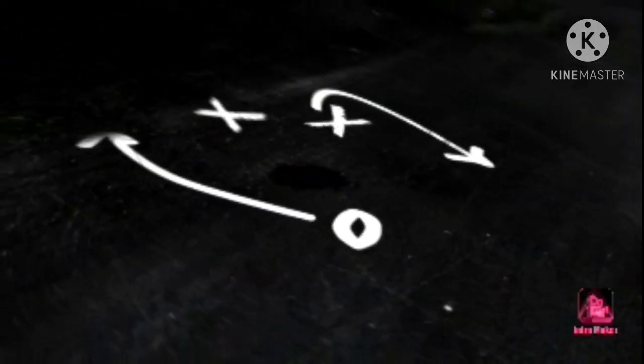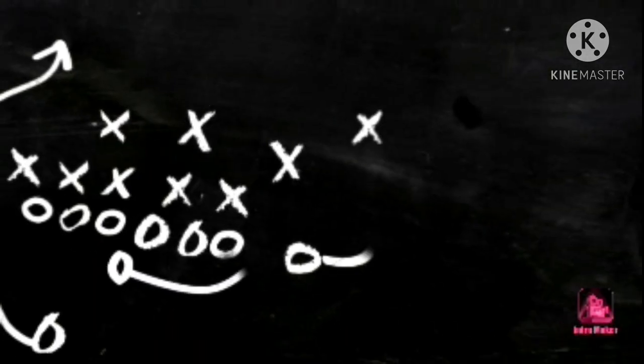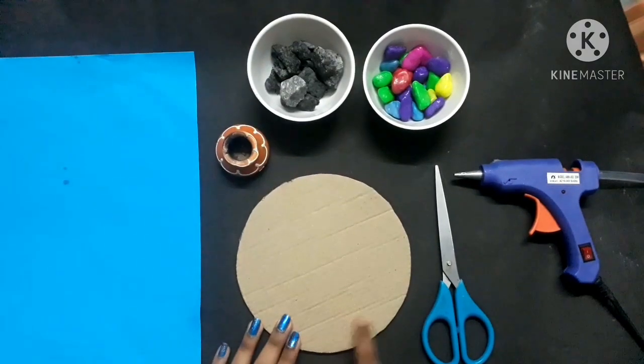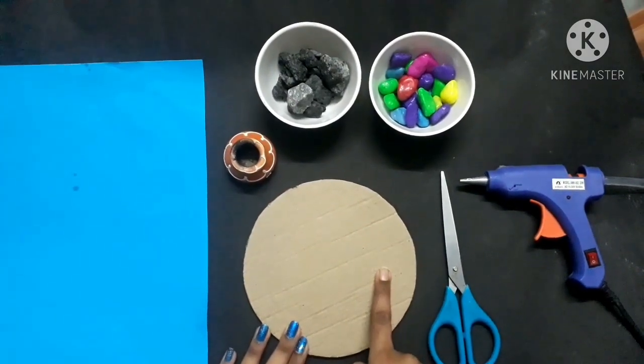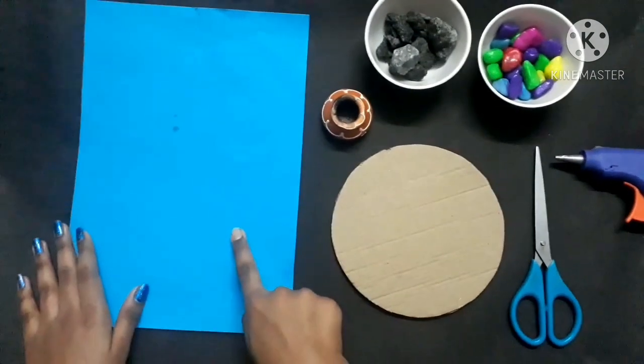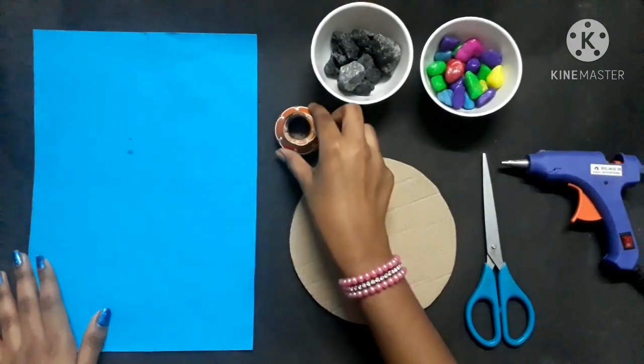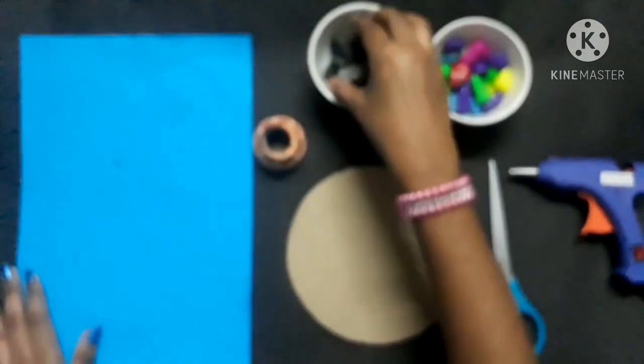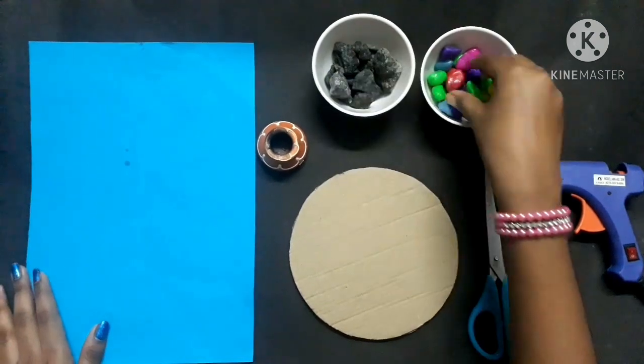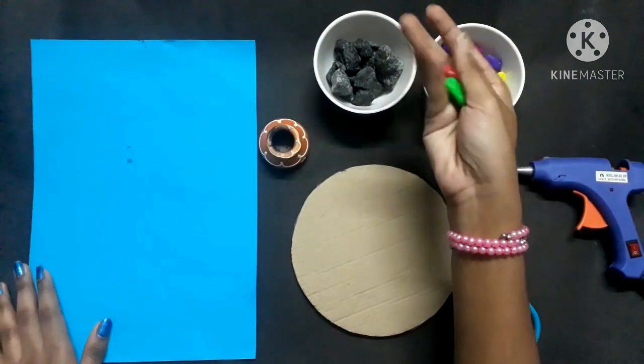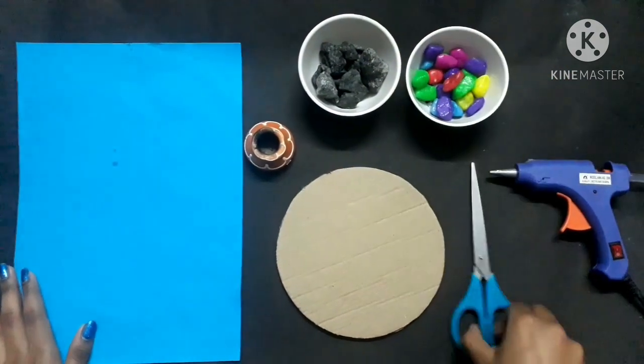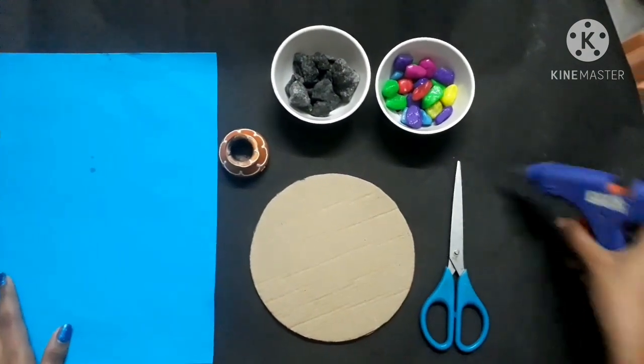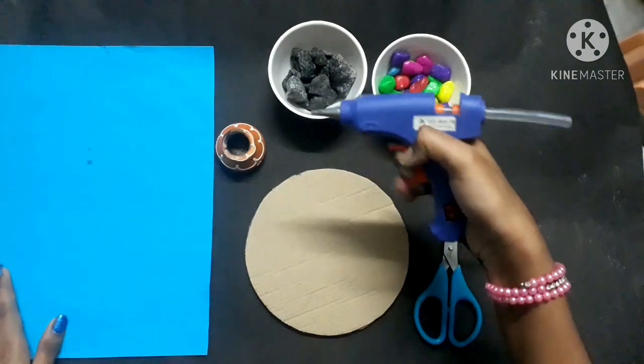Hello friends, welcome back to our channel Rocky Stars. Today we are going to make a showpiece. Take a circular cardboard, blue color paper, a small pot, some concrete stones, colored pebbles, scissors, and a hot glue gun.